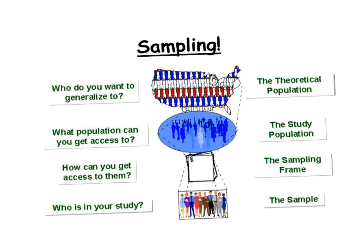The picture shows this quite neatly. The target population is everyone within America — who you want to actually study. The sampling frame is about how you can access people, so for instance you might use the telephone book. And then from that you get your sample, which is the people that you ask the questions of.